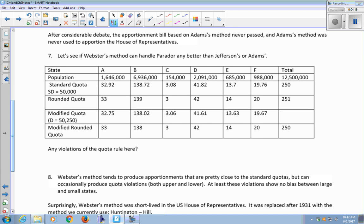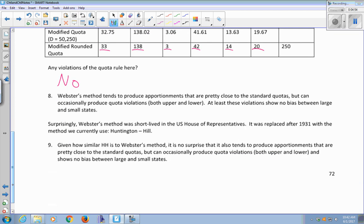So let's look at Webster's method for the Peridore example. Is it any better than Jefferson's or Adams? So I'm going to check all the standard quotas versus the seats that were awarded. So Webster's method tends to produce apportionments that are pretty close to the standard quotas. It does occasionally produce quota violations on both sides, upper and lower. But they at least show no bias between large and small states. They're just more random.